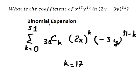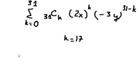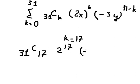We want to find the coefficient, so we have combination 31 choose 17. We have 2 to the power of k, so we put 17. Multiply by negative 3 to the power of 31 minus 17.